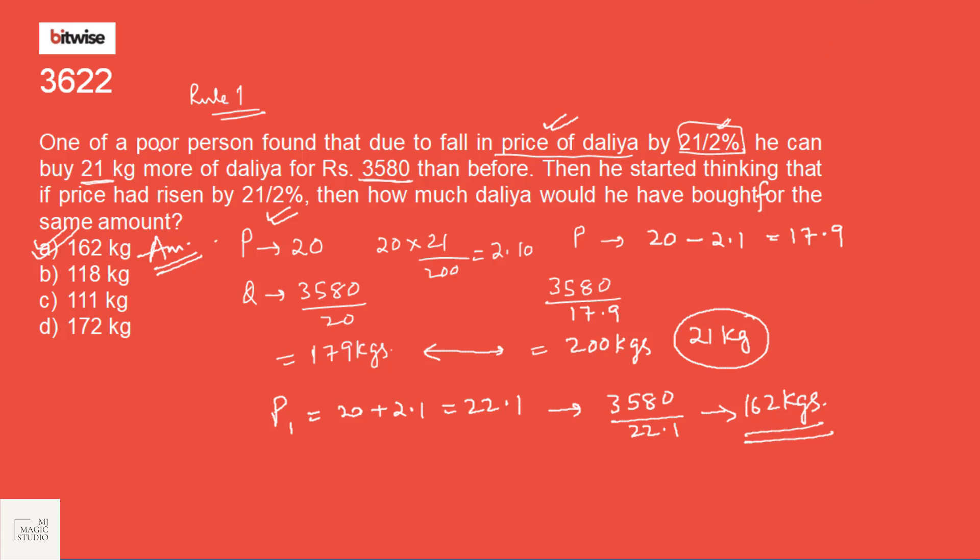If you don't want to take a price or you don't want to assume any price, then obviously if price was P, then the quantity purchase was 3580 by P. Now price is increased by 21/2%. So price have become 1 plus 21 by 200, that is 221 by 200 P. So 3580 by 221 by 200 P minus this should be equal to 21. We need to solve this and find the value of P. And then we will get P equals to 20. Once we have this P equals to 20, we need to come back to this point. New price after the increase will be 22.1 and the quantity purchase will be 162 kgs.